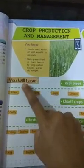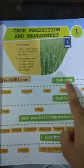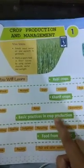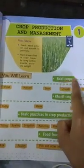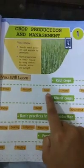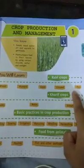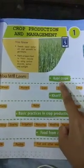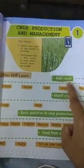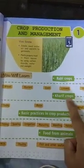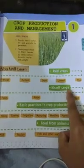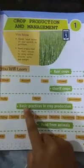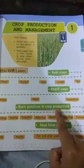In this chapter we will learn about crops, crop production and management. Number one: Rabi crops such as wheat, mustard, gram, linseed, and pea that are grown in winter. Kharif crops such as paddy, maize, and groundnut that are grown in the rainy season. Next point is basic practices in crop production.